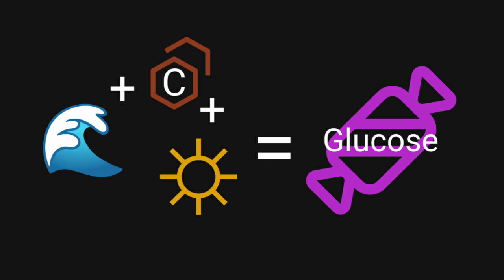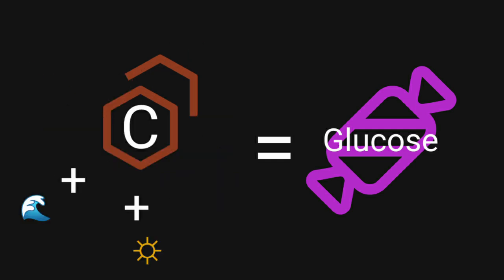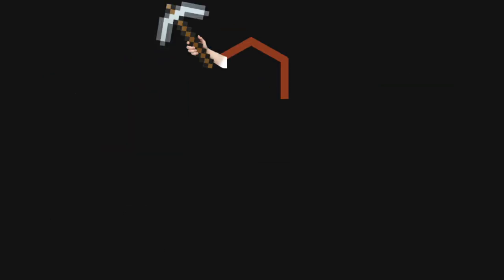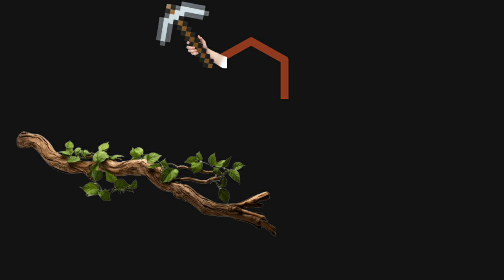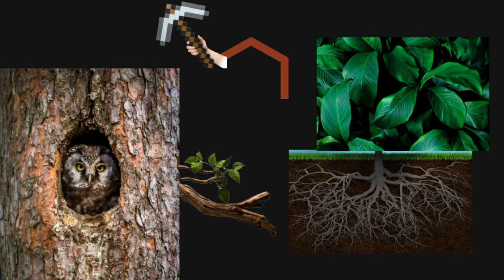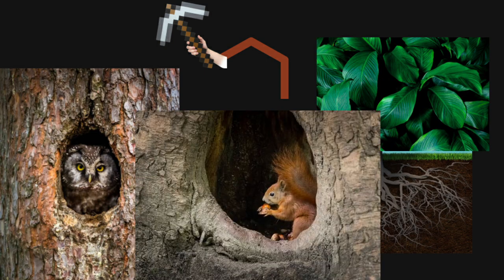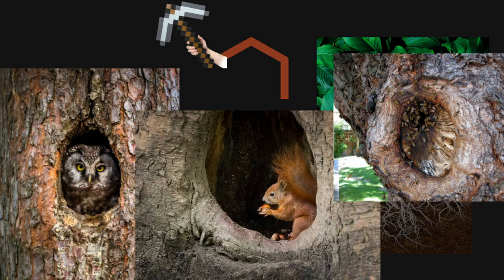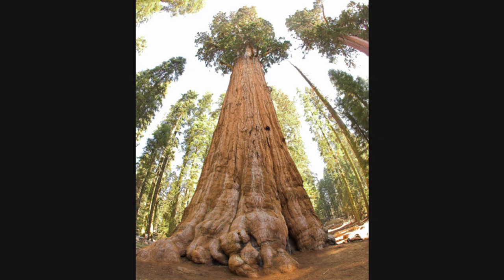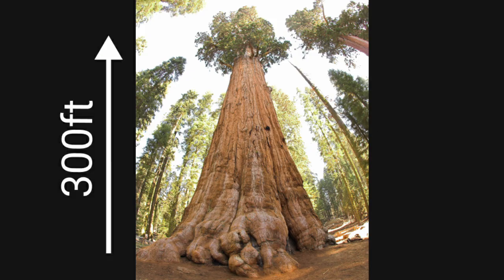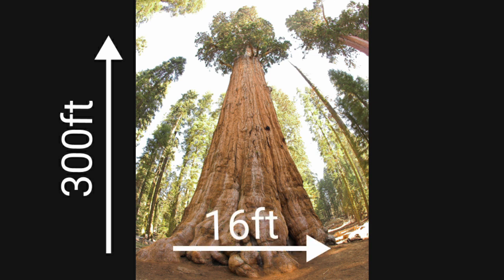But what we didn't talk about is how only some of that carbon is used to make energy for the cells, and whatever is left over gets put to use doing other fun things — like building branches, roots, leaves, birdhouses, pantries for squirrels, hive havens for bees, etc. So now you know, sort of, where a tree that is 300 feet tall and 16 feet in diameter got all of the building blocks it needed to put itself there.